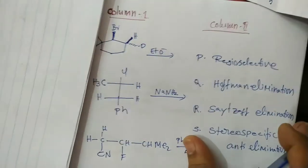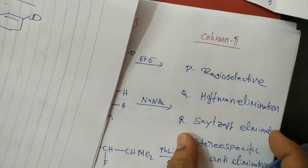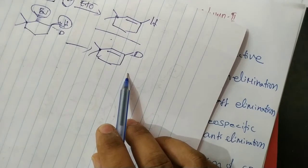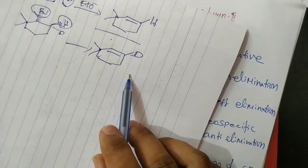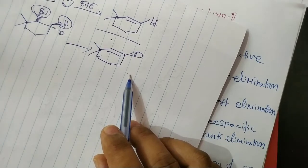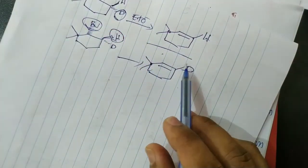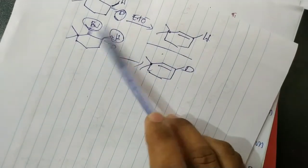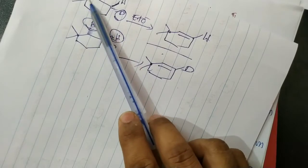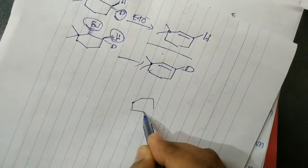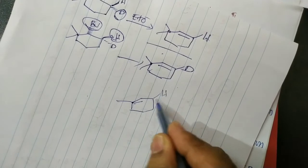Here in this case, only one product is possible. That is neither a Hoffman product nor a Saytzeff product — we cannot say that, because only one structural isomer is possible. It is not regioselective because only one structural isomer is possible. At this carbon only hydrogen is there; at the other carbon hydrogen is not there.